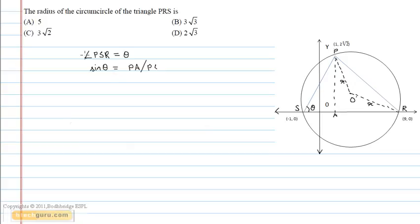Now we can see that PA is equal to 2 root 2 whereas PS is equal to the distance between the point S and P, i.e. 1 plus 1 whole square plus 2 root 2 whole square and we get this as 2 root 2 by 2 root 3.